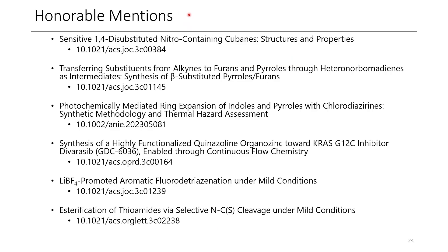In addition to the five important papers for this month, we have several honorable mentions. My favorite among these is the esterification of thioamides to make thionoesters via selective C-N bond cleavage under mild conditions. These authors succeeded where I failed — I had tried employing an approach like this to make thionoesters. So congratulations to them on creating a new way to make thionoesters — I wonder if we'll see this approach used in the future. Hopefully you've enjoyed this video. Thanks for watching, and I hope you have a great day.